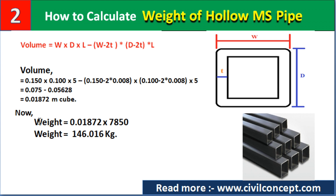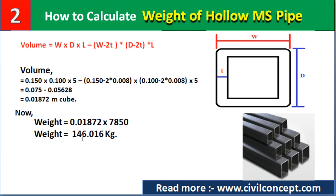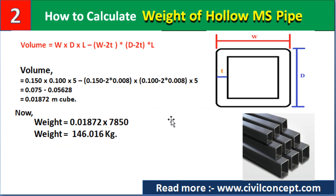Now, weight equals volume into density. Volume is 0.01872 cubic meters and density is 7850 kg/m³. After calculating, we get a weight of 146.016 kg. That is the weight of this rectangular or square MS steel pipe.